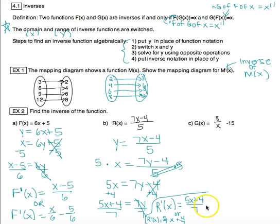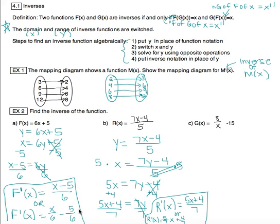Five x plus four over seven, or equivalently five-sevenths x plus four-sevenths, would also be an acceptable answer. I typically let students leave it in the combined form, but be aware of the separated form in case it's one of the multiple choice options.